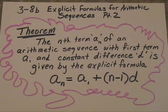This is the theorem that says it all. The nth term, a_n, of an arithmetic sequence with first term a_1 and constant difference d is given by the explicit formula: a_n = a_1 + (n-1)d.